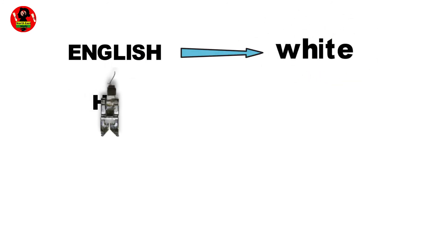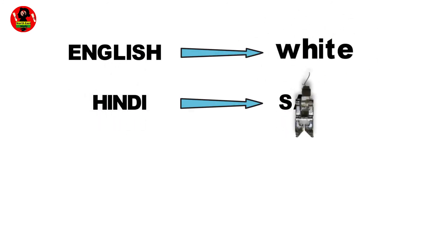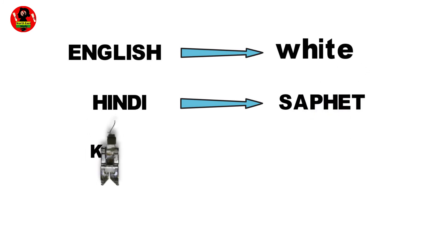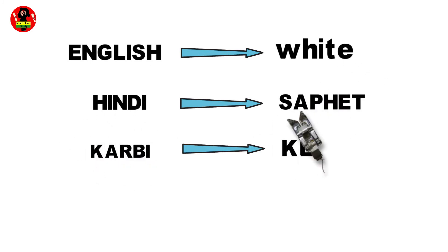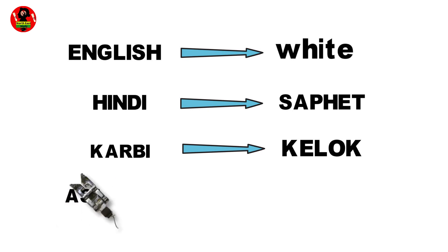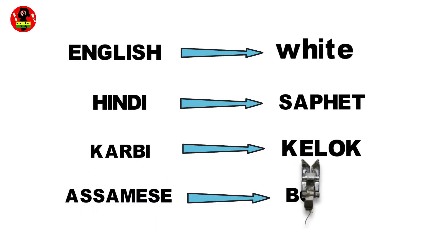English: White. Hindi: Saphed. Karbi: Kilok. Assamese: Bogah.